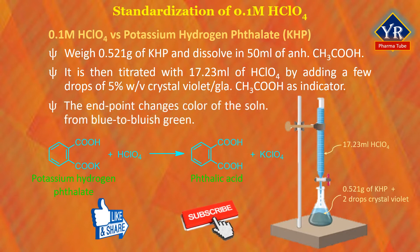At the end of the titration, the color of the solution changes from blue to bluish green. The exact molarity of the perchloric acid solution is calculated by taking 204.2 grams per mole as the molar mass of potassium hydrogen phthalate and based on 1:1 stoichiometry in the titration reaction.